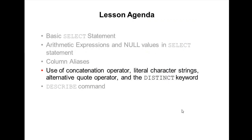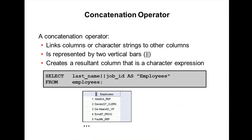Now I'm going to explain how to use the concatenation operator, character strings, and the alternative quote operator, and the distinct keyword in the SELECT statement. The concatenation operator links columns or character strings to other columns. For example, we have columns like first name and last name in the employees table. The concatenation operator is represented by two vertical bars like this.